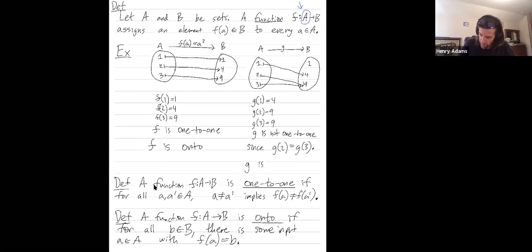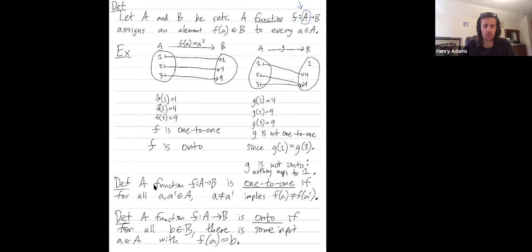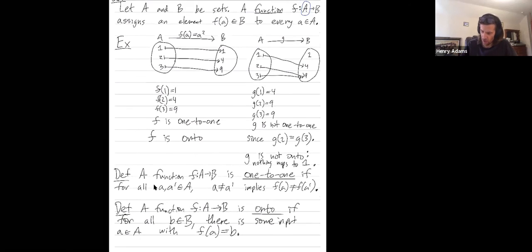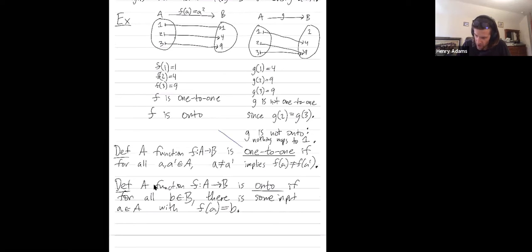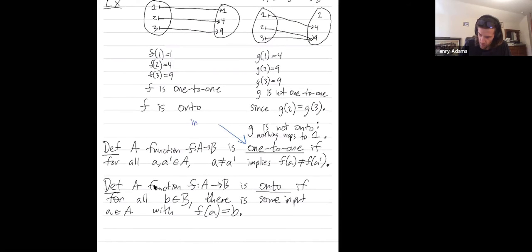G is not onto, because there's no element little a that maps to one. It takes a little practice to get used to functions and identifying which functions are one-to-one and which are onto. These concepts come up all the time in mathematics. Another name for one-to-one is injective, and another name for onto is surjective. But in this class let's use one-to-one and onto.